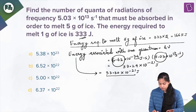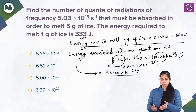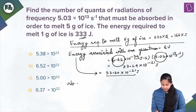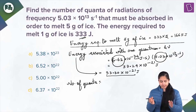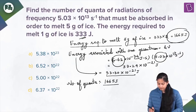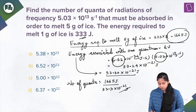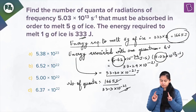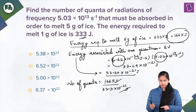The energy associated with 1 quantum is 33.3 × 10⁻²¹ joules. The number of quanta that must be absorbed to melt 5 grams of ice equals the energy required to melt 5 grams of ice — 1665 joules — divided by the energy associated with 1 quantum, 33.3 × 10⁻²¹ joules.